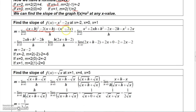You've got to subtract f of x. Here's f of x and you'll subtract. And then, in quotient form, you divide by h. So, I need to simplify this numerator as much as I can.